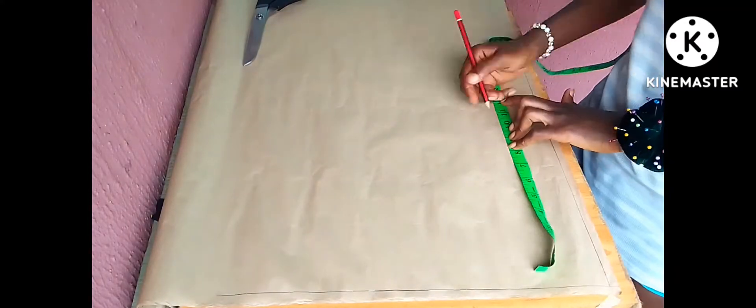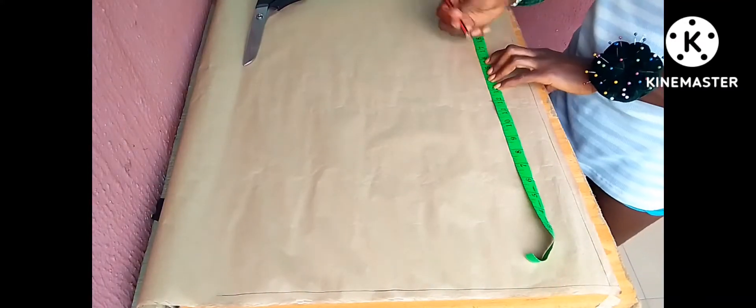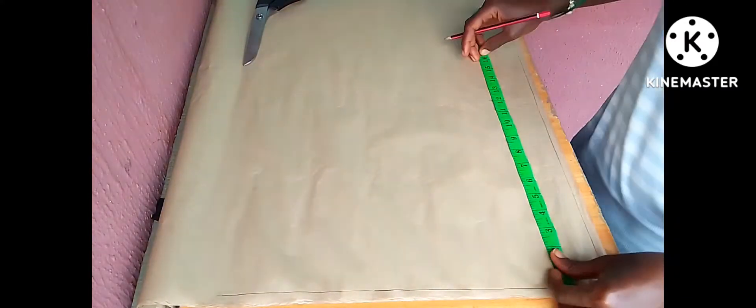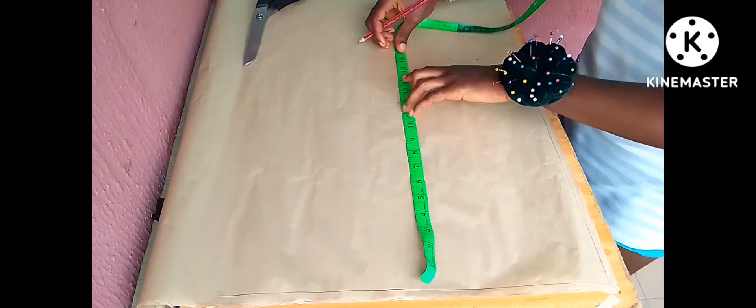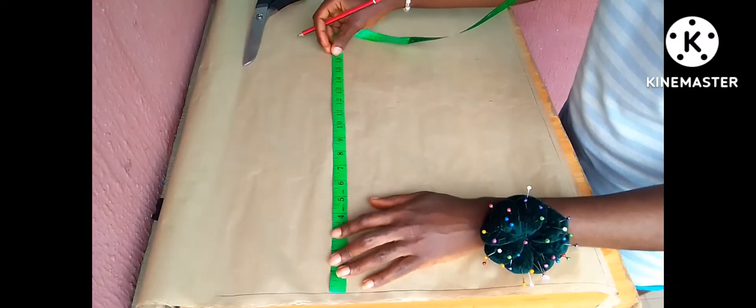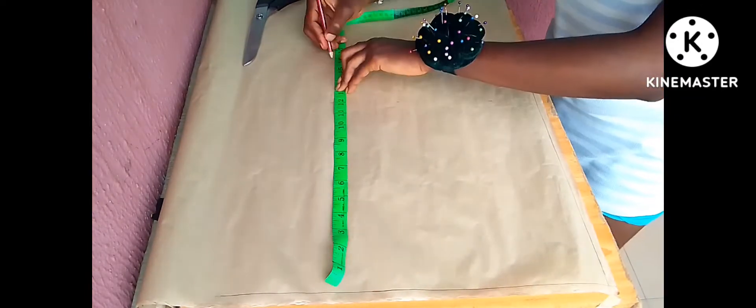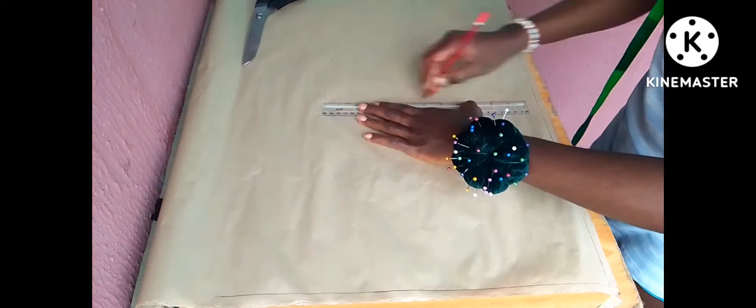What I'm actually trying to do is to draft out my basic bodice pattern. Now what I'll have to do is to mark out my underburst and my half length. My underburst is 12 and my half length is 15 plus 1 inch allowance. So I made it 16. So I rolled a line across this.